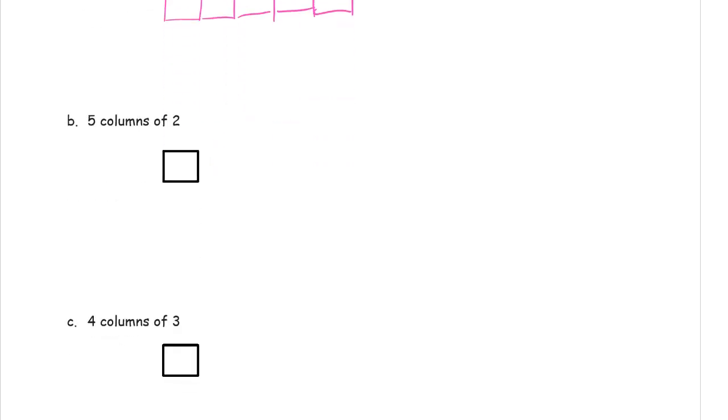Five columns of two. So we need a column of two, and now we need five of those. And that's one, two, three, four, five columns of two. Great.